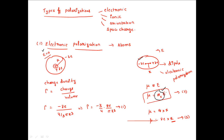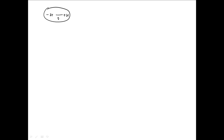The dipole moment can be written as charge times distance: μ = −ZE × x. We can redraw this diagram showing the positively charged nucleus +ZE and the negatively charged electron cloud −ZE with charge separation x, while the electric field is applied.